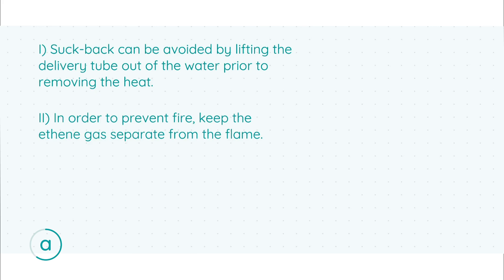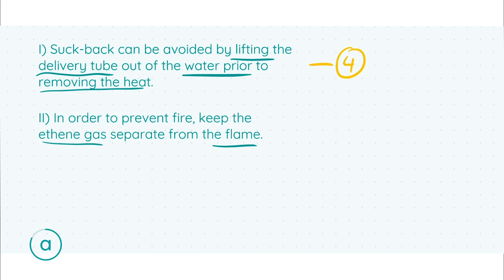Moving to the theory for Part A, we're asked how to prevent suckback and fire. For Part i — avoiding suckback — suckback can be avoided by lifting the delivery tube out of the water prior to removing the heat. As long as we lift the delivery tube out before removing the Bunsen burner, no vacuum is created, which means no suckback occurs.